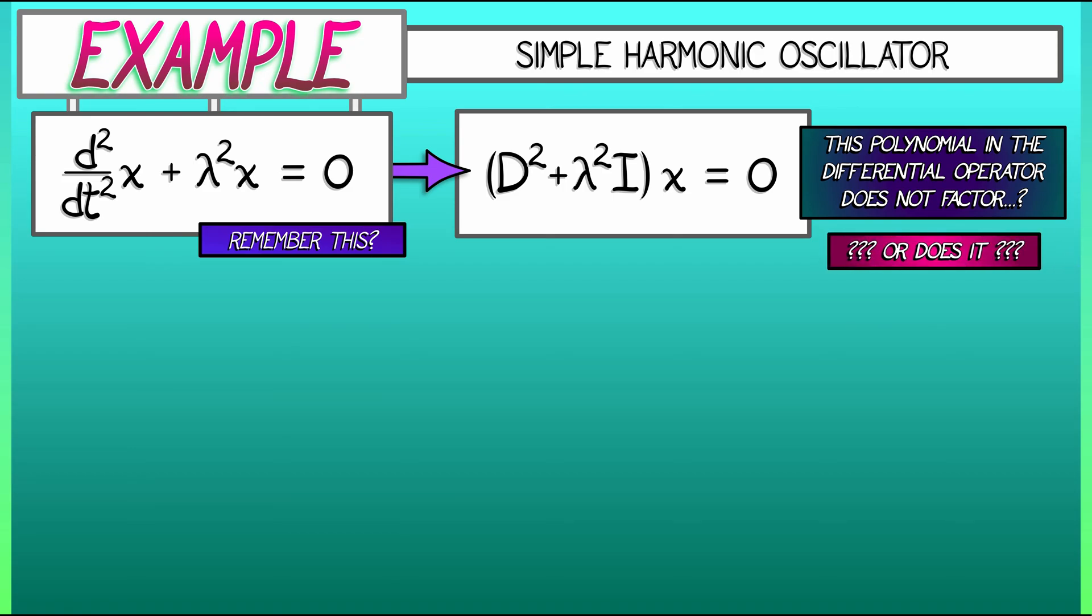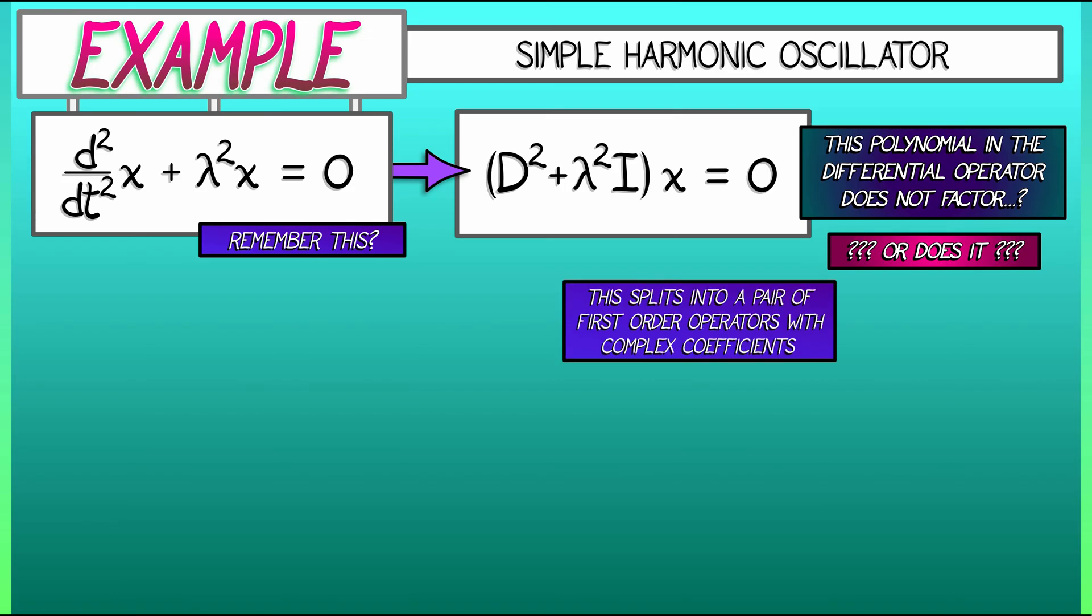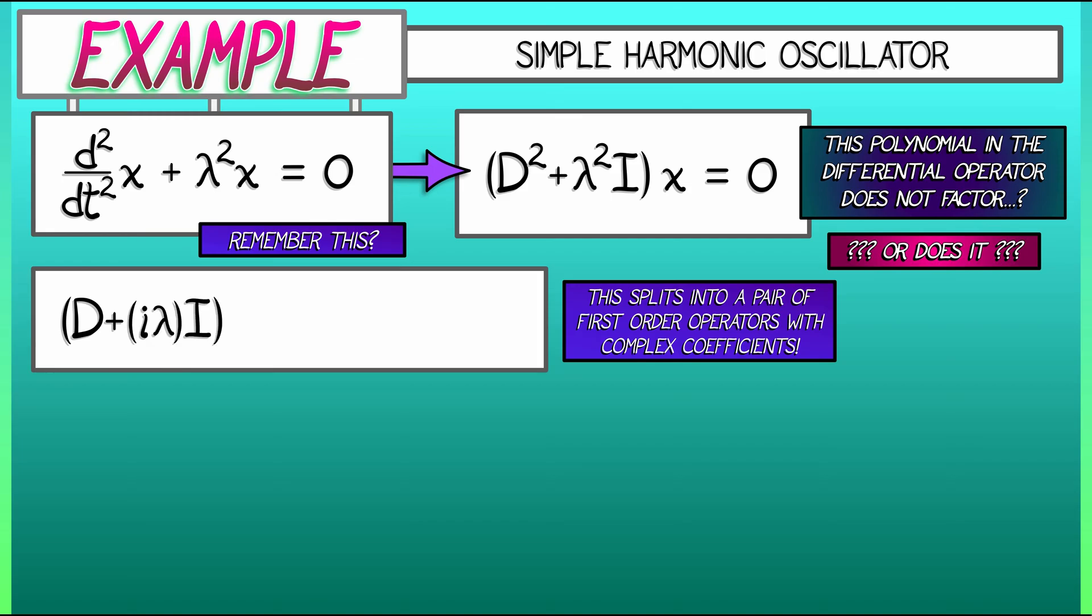We can factor this. We can split this into a pair of first-order operators if we use complex coefficients. The imaginary number lowercase i is going to be useful to us. Watch this. We can split this as d plus i lambda times i times d minus i lambda times i. Apply that to x get zero.